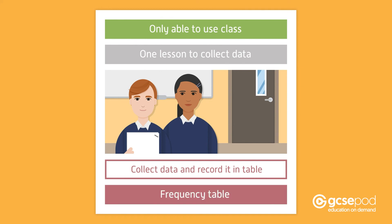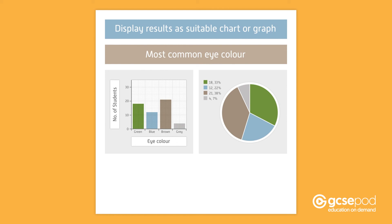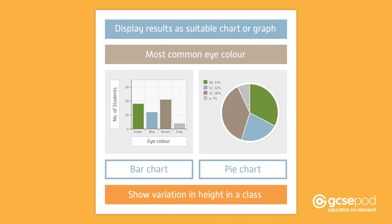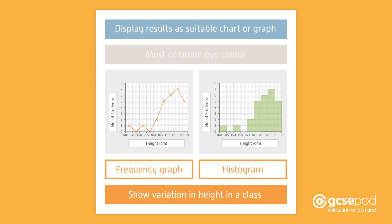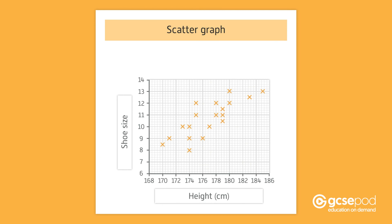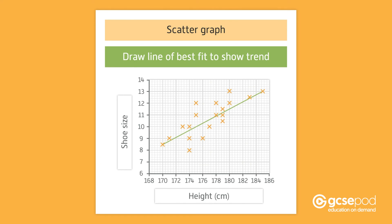This could be a frequency table. To analyse your results, you need to display it as a suitable chart or graph. If you investigated what the most common eye colour was, then a bar or pie chart would be the most suitable. To show variation in height in a class, you would draw a frequency graph or histogram. To find out if there is a relationship or correlation between two characteristics, like height and shoe size, you would draw a scatter graph and then draw a line of best fit to show the trend.